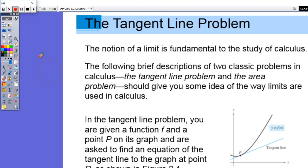In the tangent line problem, you are given a function f and a point P on its graph and are asked to find the equation of the tangent line to the graph at point P. So as you can see, here's a little example of what we're trying to do. So we have a graph, we have point P right here, and we need to figure out what is the slope of the tangent line at this little point P where it intersects with the graph.